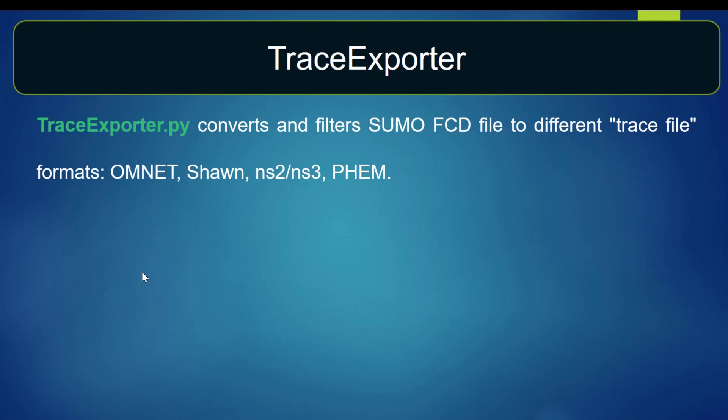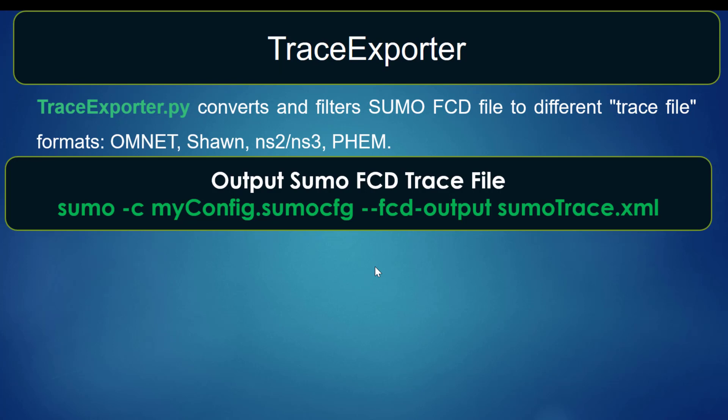In order to generate an output file from SUMO that can be understood by other network simulators, the very first step is to generate the SUMO trace file — the SUMO FCD trace file, that's the float car data trace file. I already showed you before how to generate this FCD trace file by using the following command.